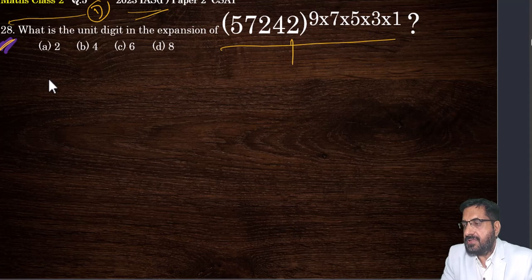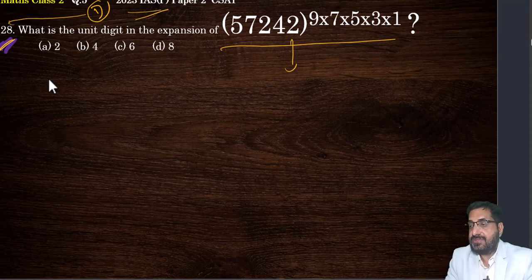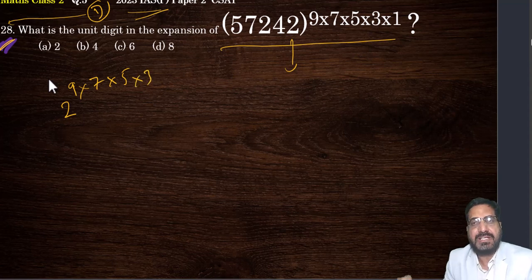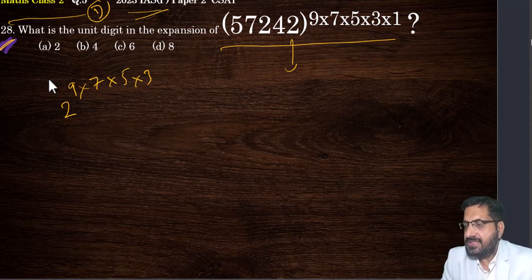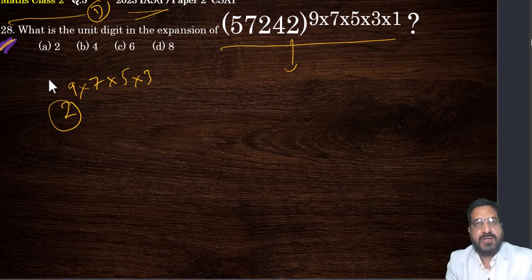Always observe for unit place's digit. Here it is 2. Forget about other places, other digits. What is there in unit place? 2 is there. So whatever is raised to 2 — that is 9 × 7 × 5 × 3 — 1 you can ignore because anything multiplied by 1 is that thing only. This is the unit place's digit, that is 2. Here one important formula: you have to follow the pattern of powers of 2.